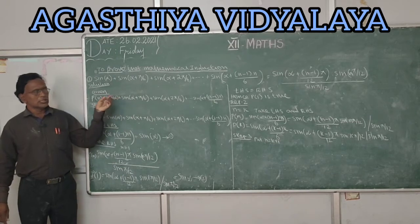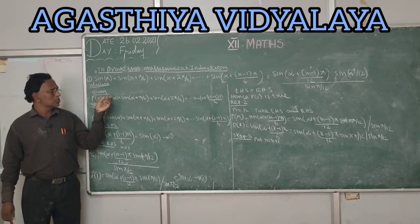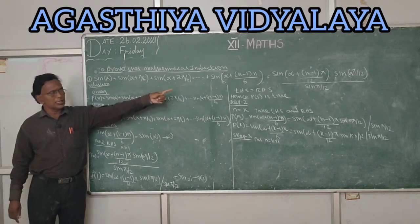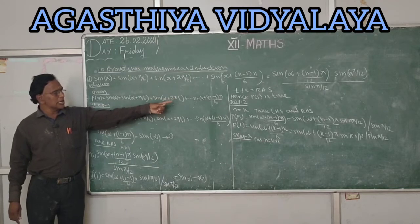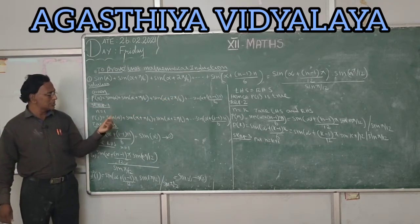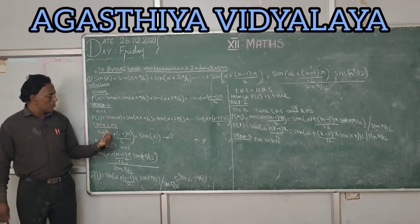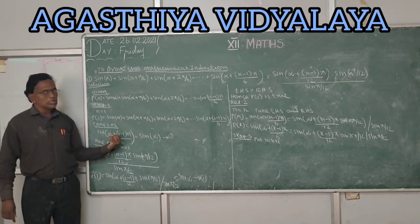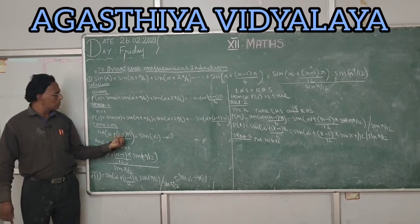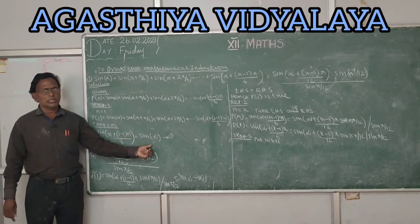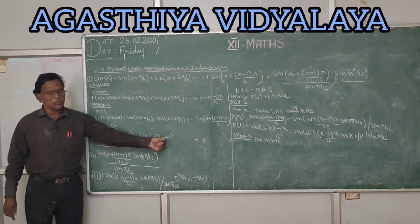These are the equations. First we take the LHS: sin(α + (n−1)·n/6), and substitute n equal to 1. When n=1, (1−1) equals 0, so the term becomes 0, and only sin α remains on the LHS — call this equation 1.